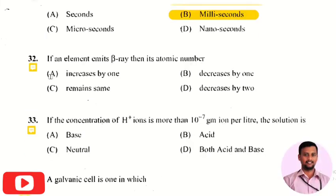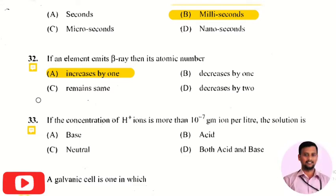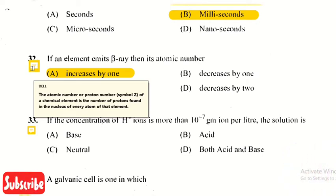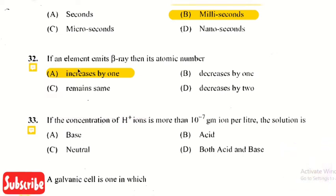The next question is: if an element emits beta rays, then its atomic number — the right answer is option 1, that is increased by 1. So if any element emits beta rays, its atomic number will be increased by 1. The atomic number or proton number of a chemical element is the number of protons found in the nucleus of every atom of that element.